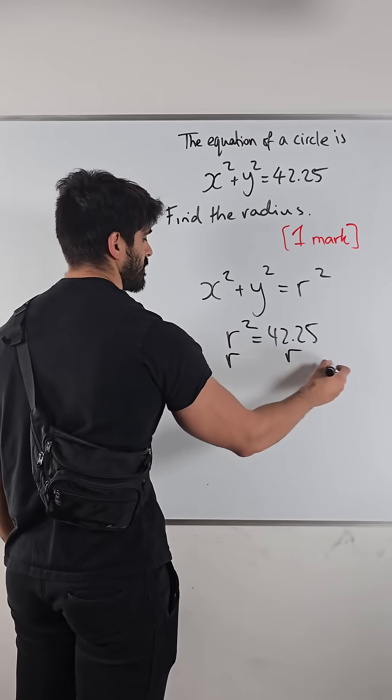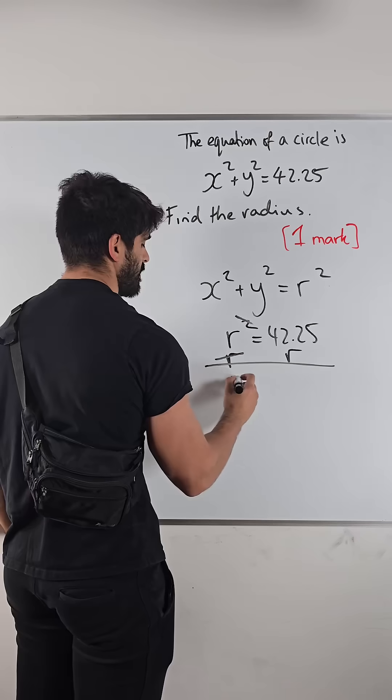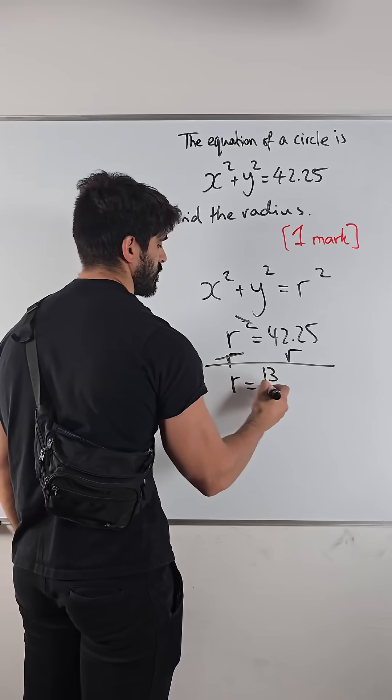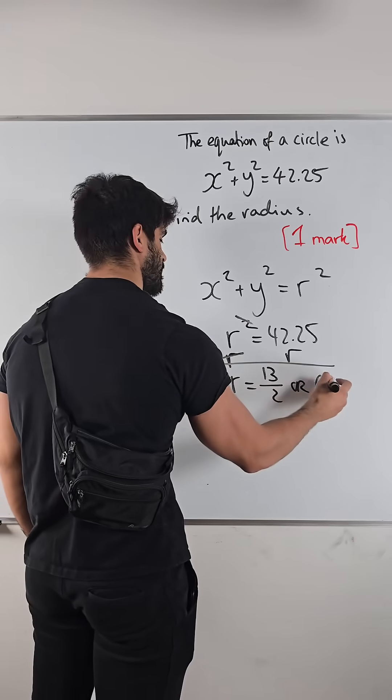And then you just need to root both sides. In your calculator, you can do that. It will give you 13 over 2 or 6.5.